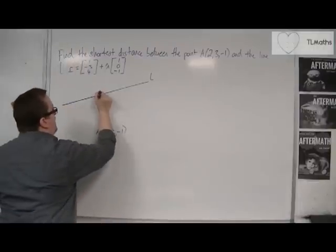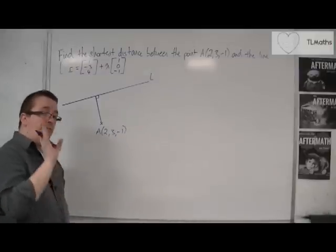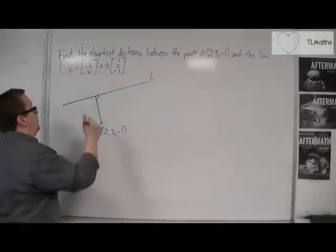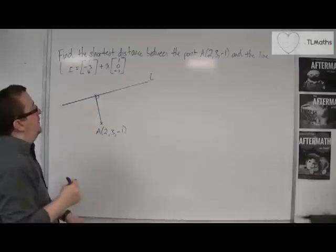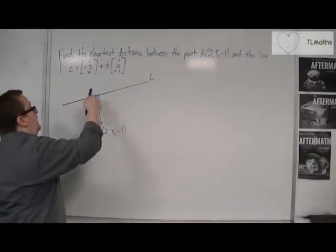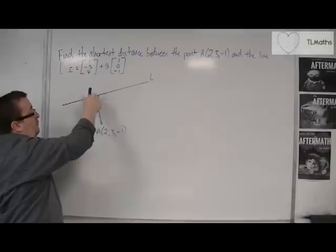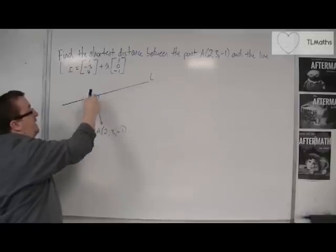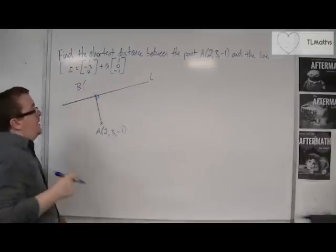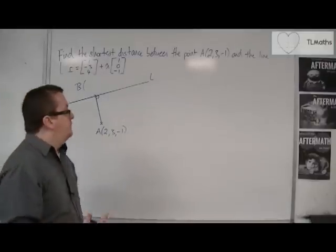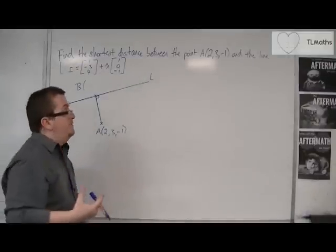That shortest distance will make a right angle with the line. We're going to use the fact that it makes a right angle in order to help us. And that will create a coordinate B — this point B will be the shortest, or the closest point to A that is on the line. That's B, and because it lies on the line, this is the key step you need to take here.